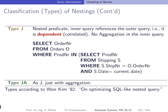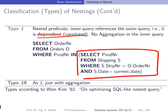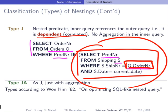Now it gets more complicated: Type J, also called a correlated or dependent subquery. Here the subquery references parts of the tuple from the outer query. We're selecting product number from a shipping table S where the shipping number equals the order number of the outer query's tuple — that's a dependent query. In a naive execution, we'd go through every tuple from the orders relation and for each one execute this subquery, causing quadratic cost.